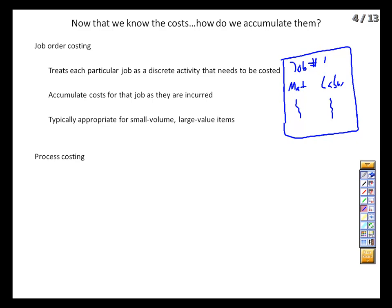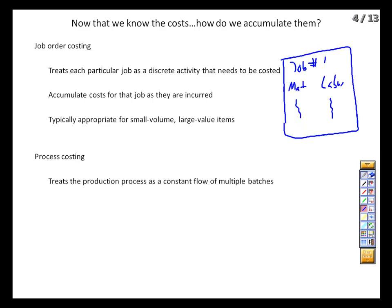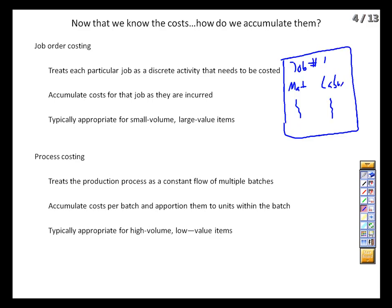The other option is process costing, which looks at the production process as a constant flow of multiple batches of some relatively homogeneous product. Say we're producing golf balls — one batch of balls should cost virtually the same as the next. Tracking individual costs at each step isn't really value-added. What we care about is that when we've got a batch of balls out of the production process, we know how much cost we incurred, how many balls came out, and on average how much each ball costs us. Who uses this? Low-cost, high-volume production manufacturers — like golf ball companies.